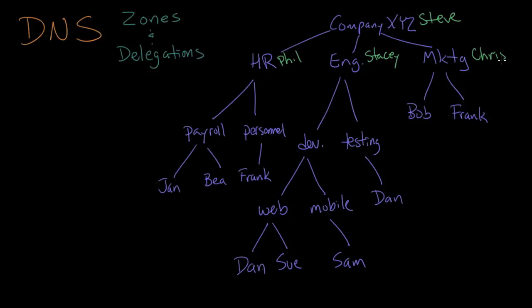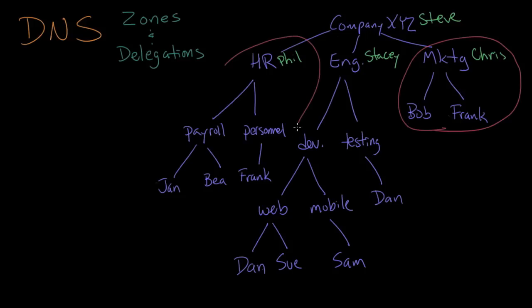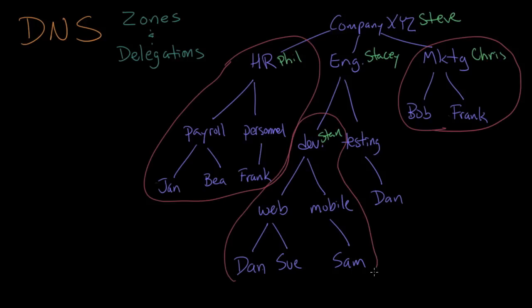Steve runs the entire company but has delegated responsibilities for various divisions to other people. Chris runs the marketing department, and because it's a relatively small department, he says he'll just run the whole thing himself. Steve has also delegated human resources off to Phil. Engineering belongs to Stacy, but Stacy can't run the entire engineering division, so she's found a manager — let's say Stan — to run development. Stan has his own area, and the rest belongs to Stacy.